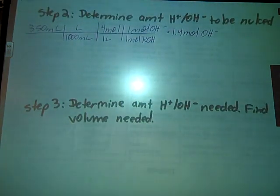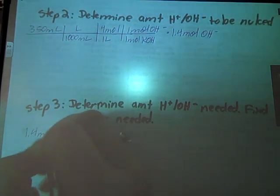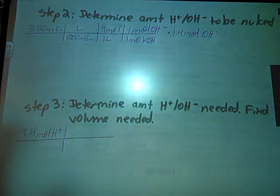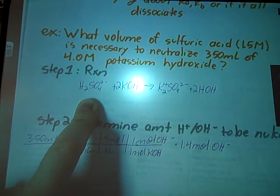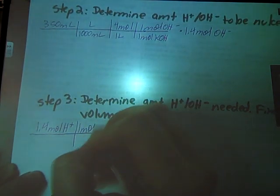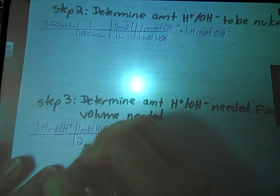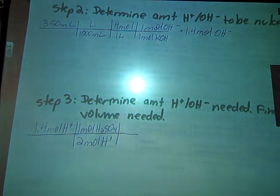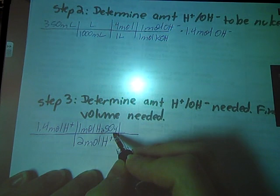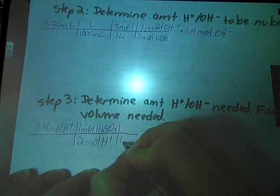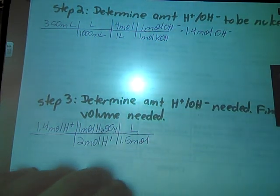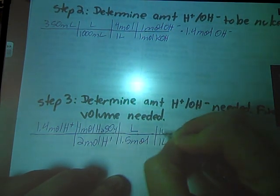That means I'm going to need 1.4 moles of H plus to nuke that. But what volume of sulfuric acid do I need? If you think about sulfuric acid, now I have 2 moles of H per 1 mole of my H2SO4. 1 mole H2SO4 would produce 2 moles of H plus. It's called a diprotic acid, 2 protons. Now, let's get from moles to liters. Our molarity is going to get us there. Problem told us that we had a 1.5 mole per liter solution, and we could stop here, or we could go on to milliliters. I like milliliters, so I'm going to go on to milliliters.